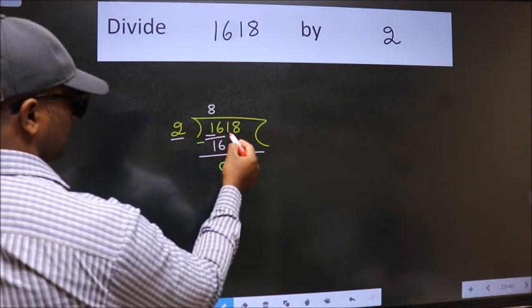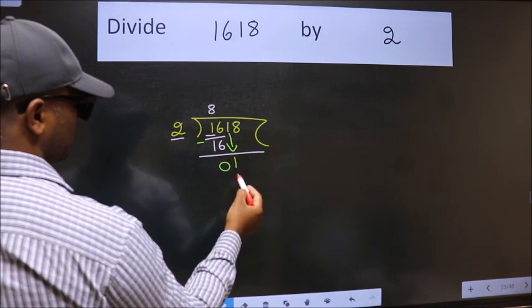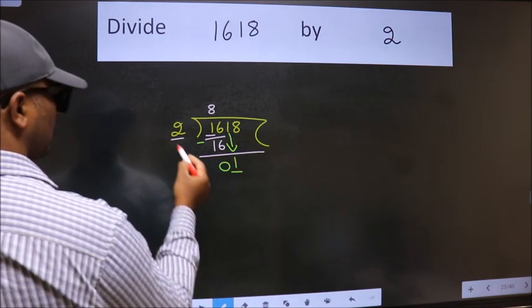After this, bring down the beside number. So, 1 down. Now here we have 1 and here 2.